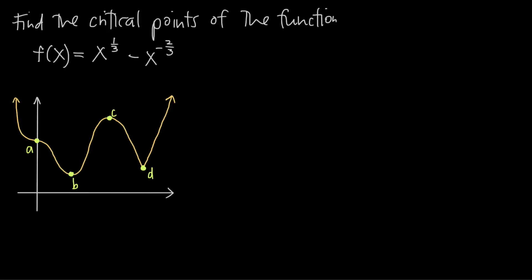In this video, we're talking about how to find the critical numbers or critical points of a function. In this particular problem, we've been given the function f of x is equal to x to the 1/3rd power minus x to the negative 2/3rds power.